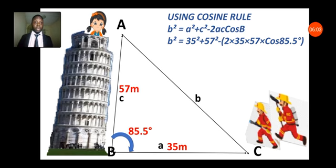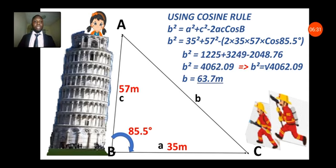Now if I substitute my a as 35 meters, my side c as 57 meters, and my cos B as cos 85.5 degrees, and I solve that properly, if I compute it properly, I will have 1,225 + 3,249 - 2,048.76.